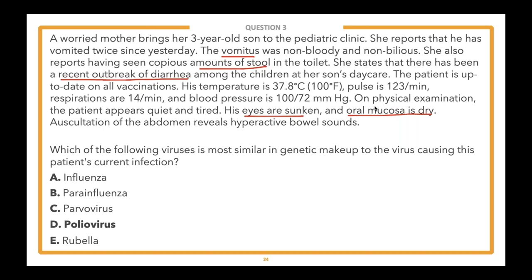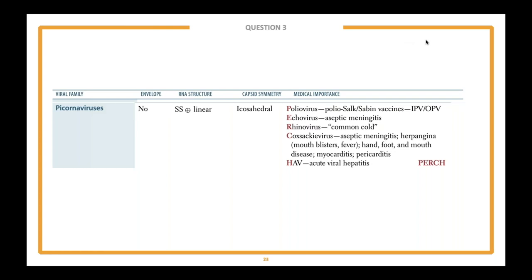Norovirus is a positive-sense, single-stranded RNA virus, non-segmented with a non-enveloped icosahedral capsid. Of the answer choices, poliovirus also has those same features — positive-sense, single-stranded RNA, non-enveloped icosahedral capsid — and is therefore the correct answer.